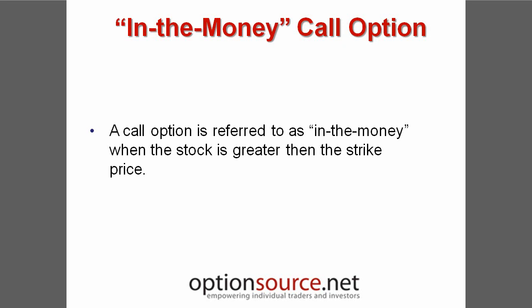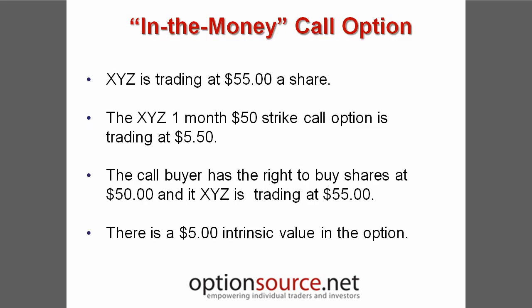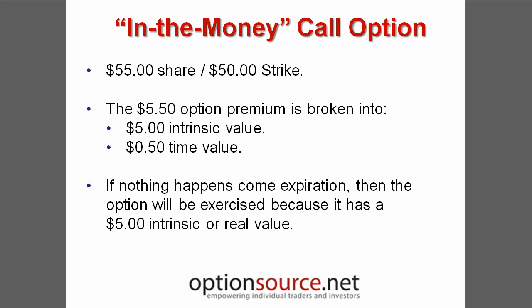A call option is referred to as being in the money when the stock is greater than the strike price. If XYZ is trading at $55 per share, a call option with a $50 strike and one month until expiration might have a premium of $5.50. In this case, the call buyer has the right to own the shares at $50. With XYZ trading at $55 per share, the call option has a $5 intrinsic value. The $5.50 premium can be broken down into two components: by subtracting the strike price from the stock price, we can determine that the option has an intrinsic value of $5. We then subtract the intrinsic value from the premium to determine the time value, which in this example is $0.50.